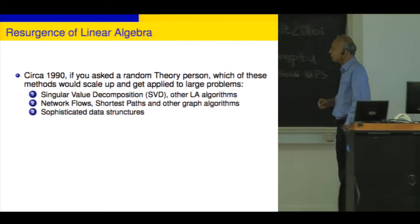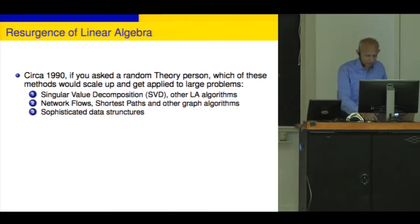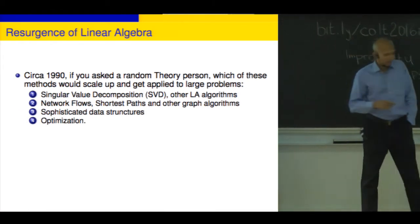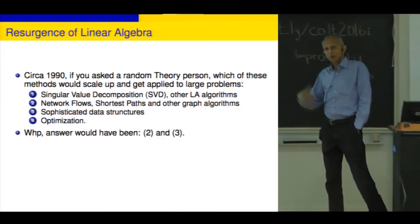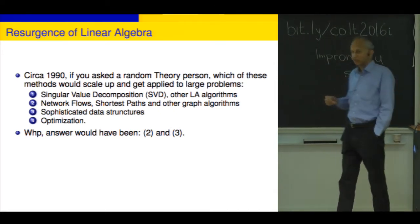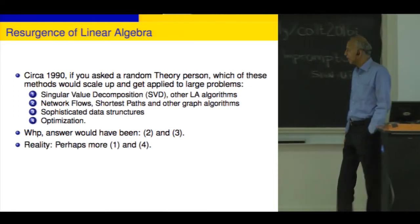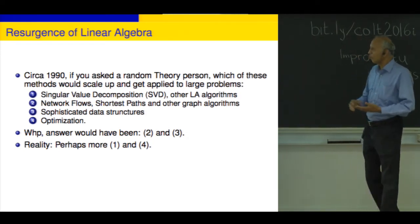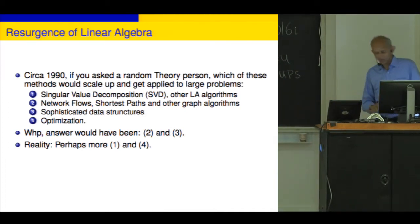The answer going back to the 90s would quite often have been two and three — graph algorithms and data structures. Whereas I want to assert that in reality, what has panned out is that perhaps one and four — SVD and optimization — have scaled up more and been applied more widely than people would have guessed in the 90s.